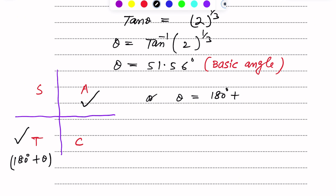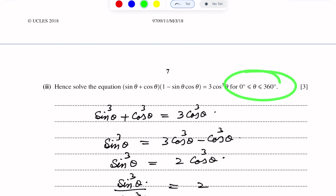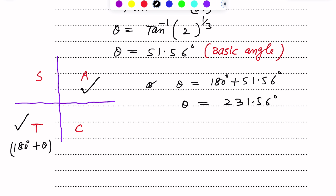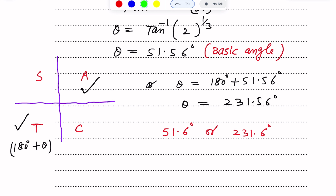So the third quadrant angle is 180 degrees plus 51.56 degrees, giving theta equals 231.56 degrees. These are the two answers. When angles are in degrees, we correct to one decimal place, so the final answers are theta equals 51.6 degrees and theta equals 231.6 degrees.